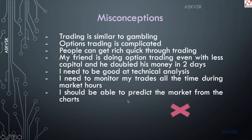I should be able to predict the market from the charts. This is one of the biggest misconceptions. Looking at the charts and predicting what's going to happen tomorrow is a big waste of time. Nobody can actually predict how the market would move. You can have all different permutations and combinations — if the market goes up, do this; if the market goes down, do this. That's fair enough. But predicting that the market will definitely go up or definitely go down tomorrow — that kind of information is a big waste of time and energy. Relying on that kind of information to place our trades is the biggest mistake or misconception that people have.